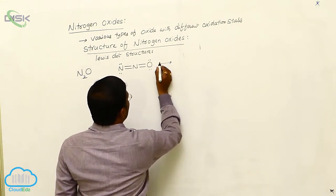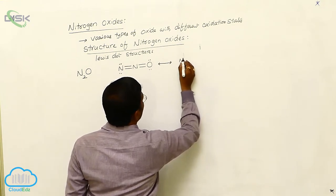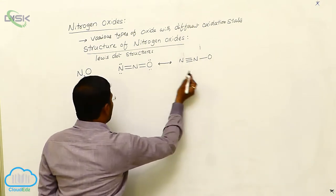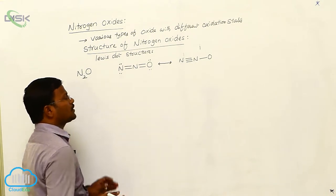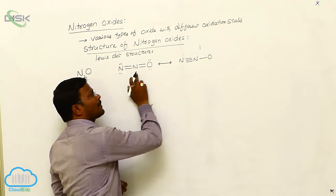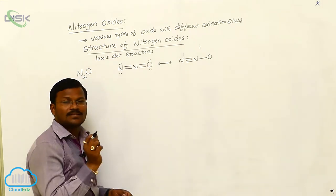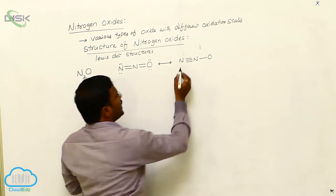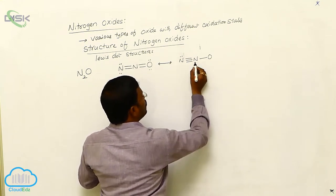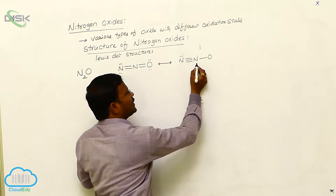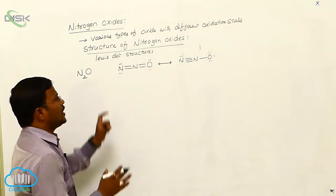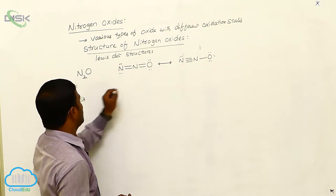It will show resonance with another isomer: N double bond N–O. The two are both dinitrogen monoxide structures — they are called resonance structures of dinitrogen monoxide. In this second resonance structure, the terminal nitrogen has one non-bonding pair of electrons, there is no non-bonding pair on the second nitrogen, and three pairs of non-bonding electrons are present at oxygen. This is the Lewis dot structure proposed for N₂O.